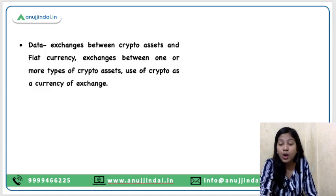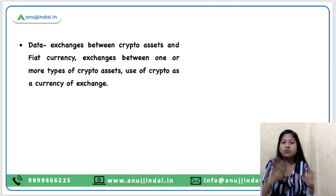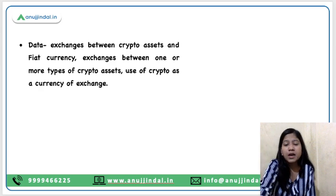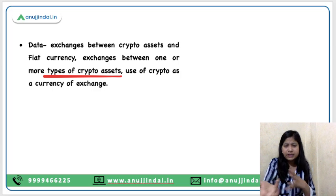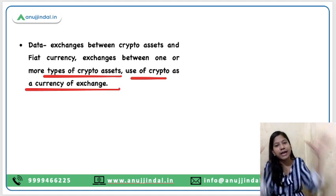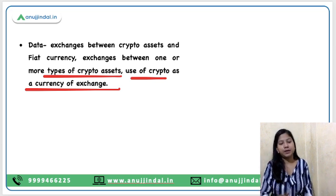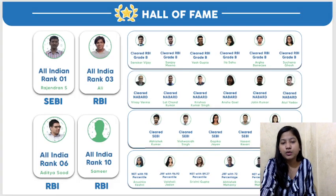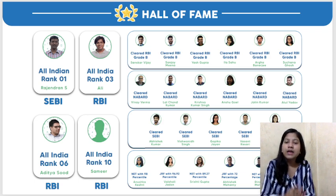The last pillar is crypto data. Whatever exchanges have taken place between crypto assets and fiat currency — for example, transferring crypto to someone's account while they pay in cash to your bank account — that is an exchange of crypto asset with fiat currency. Exchange between one or more types of crypto asset, such as giving Bitcoin and receiving Ethereum, is also a crypto transaction. Use of crypto as a currency of exchange — all such data should be reported to the government of the country in which these transactions take place and the crypto entities operate. On that note, I would like to say goodbye to all of you. I hope you have enjoyed today's session and the explanations. Thank you so much for watching.